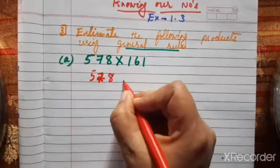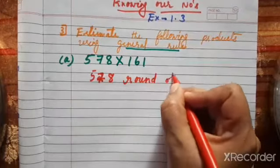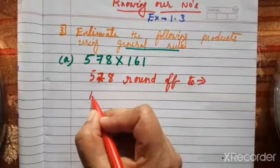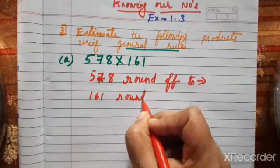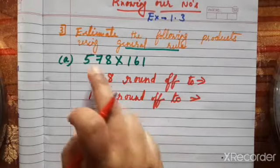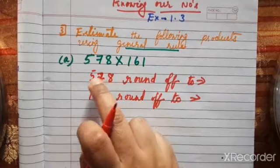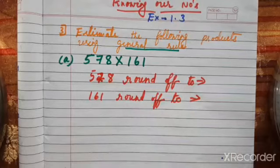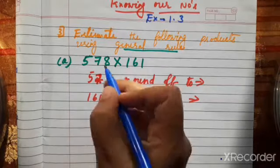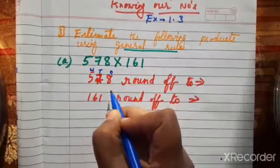First, find the round-off of each number. Write: 578 rounded off, and 161 rounded off. Write the question in black pen and the working and answer in blue pen.